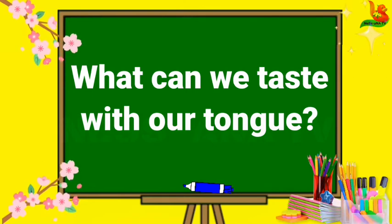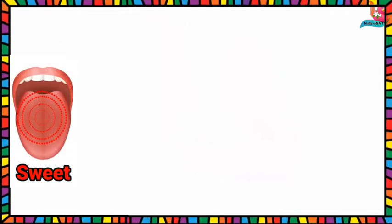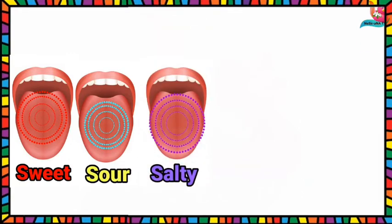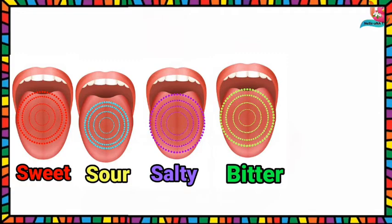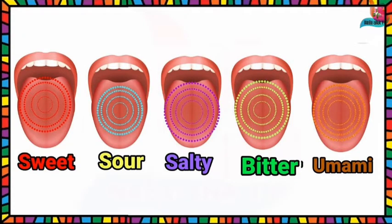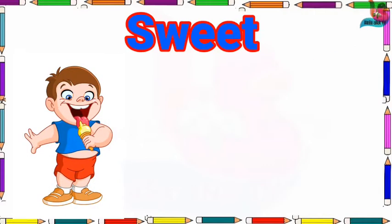What can we taste with our tongue? Sweet. Sour. Salty. Bitter. Umami. Sweet, sour, salty, bitter, and umami.